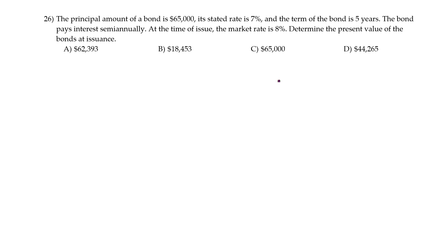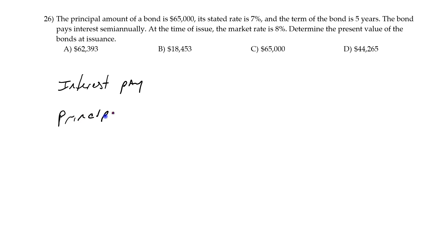With this problem, we're given some information about a bond, and we're asked to figure out the bond issue price — what's the present value of the bond. In order to do that, the bond has two cash flow streams: it has the interest payment and it has the principal payment. What we'll do is take the present value of these payments to determine the price of the bond.